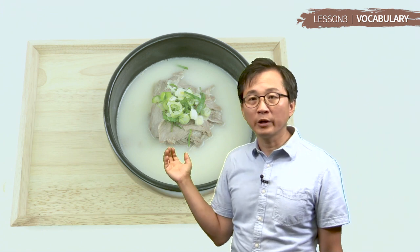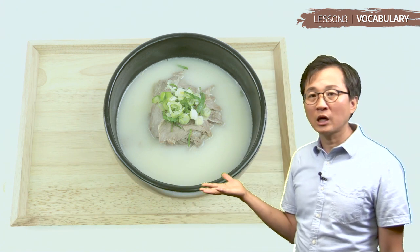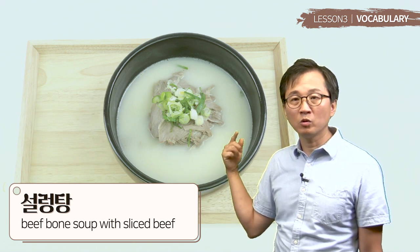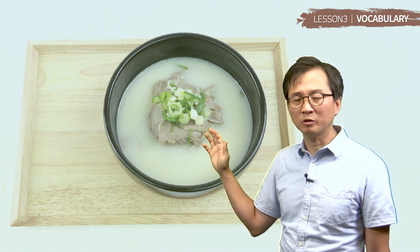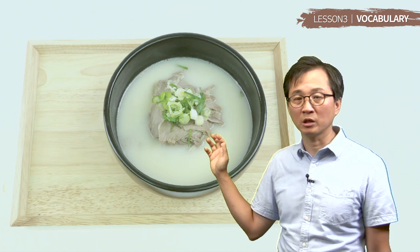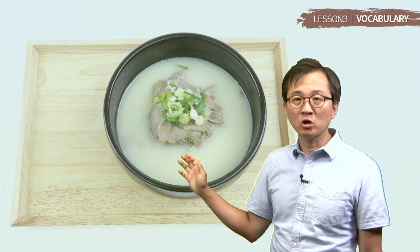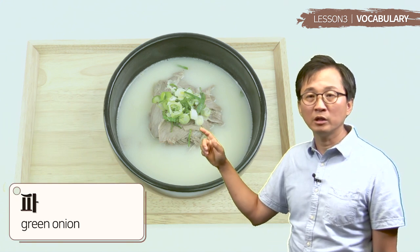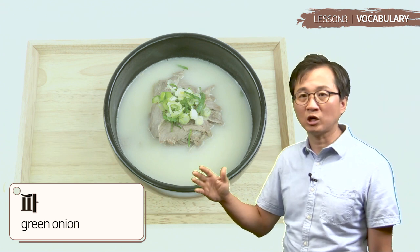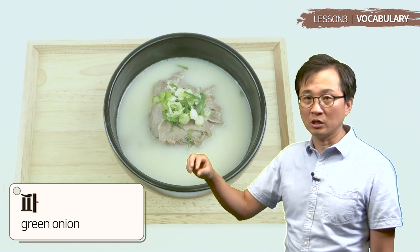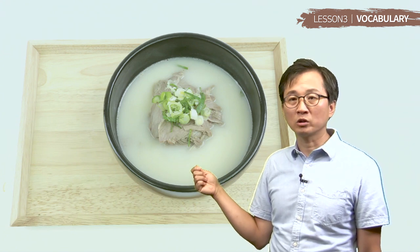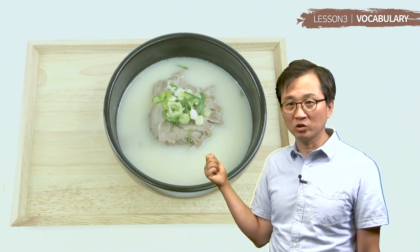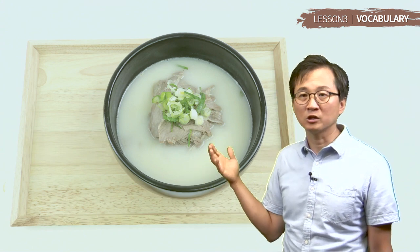그 다음에 이건 뭐예요? 설렁탕 그래요. 이거는 slices of beef. 그 다음에 below this beef there are noodles. 그 다음에 you can eat 설렁탕 with rice. 이거는 beef bone soup. 여기 파도 있네요. 파 그러면 green onion. Chop green onion and put it in. 같이 먹어요. 설렁탕은 아침에 famous breakfast menu in Korea.